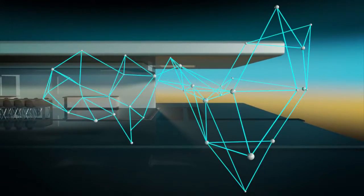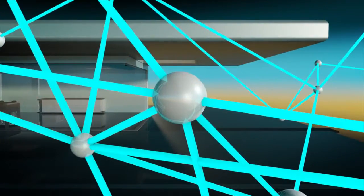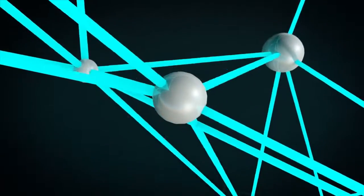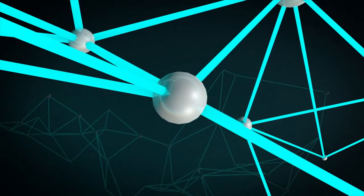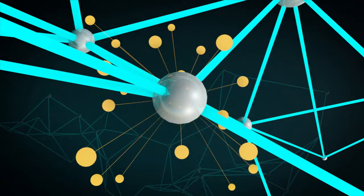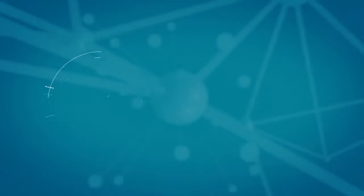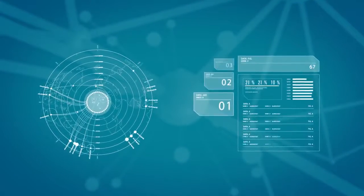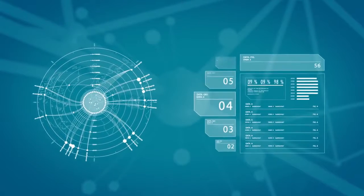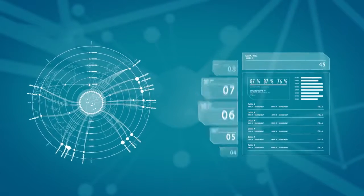Cisco StealthWatch leverages your existing network infrastructure by turning the network itself into a security sensor that can see all of your users. Real-time visibility and analytics translate into actionable information, allowing for quick response to even the most advanced attacks.